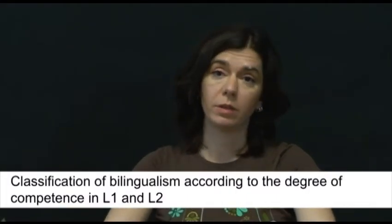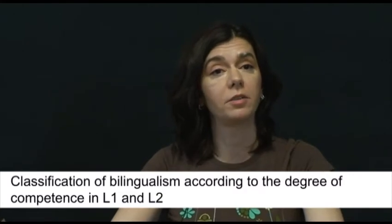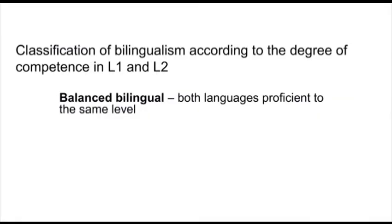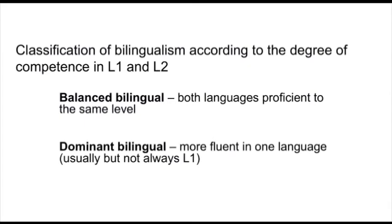We can also classify bilinguals according to the degree of competence they have in their respective languages. There are people — not many of them — who can be regarded as balanced bilinguals, where both languages are proficient to the same level, with nothing in the way they speak, write, or understand spoken language to distinguish them from a monolingual. But then there are others who speak two languages at a high functional level, yet are more dominant in one of them. Often the dominant language tends to be the first one acquired in life, but that's not necessarily the case.